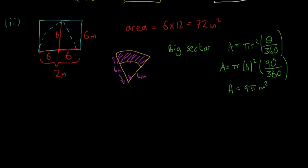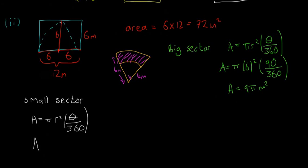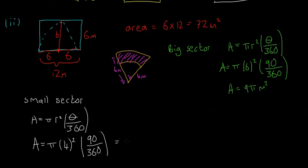Then for the small sector, using the same formula A = πr² × θ/360°, with r = 4 for the smaller circle: A = π × 4² × 90/360 = 4π metres squared. That's the area of the small sector.